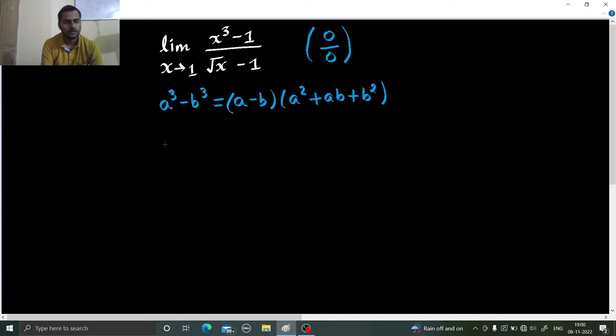So this will be limit x tending to 1, x minus 1, x square plus x plus 1, divided by under root x minus 1.